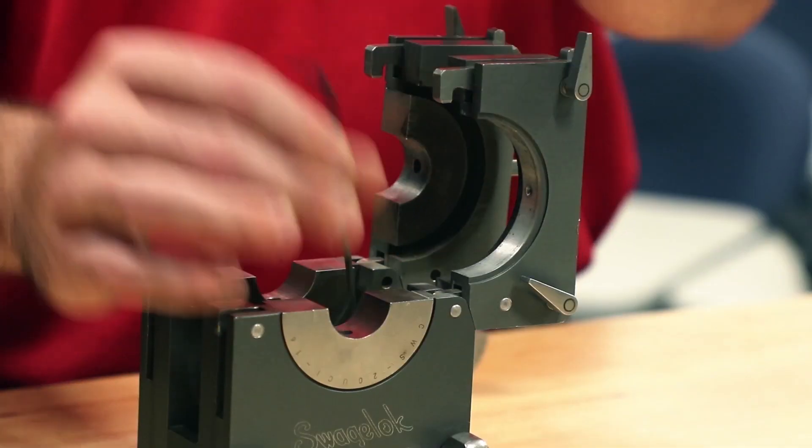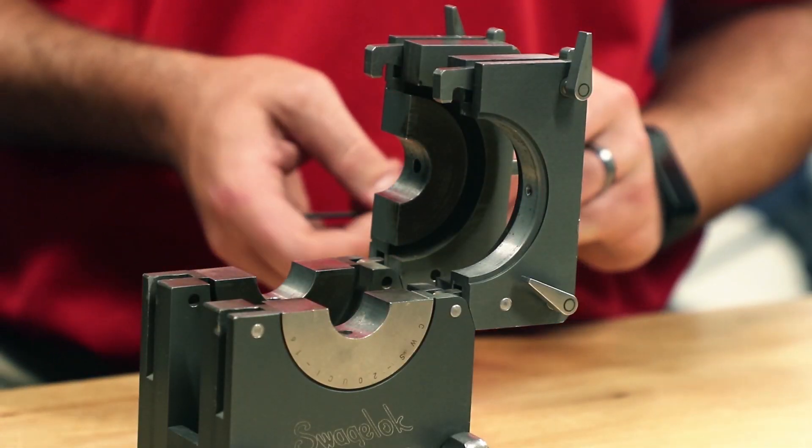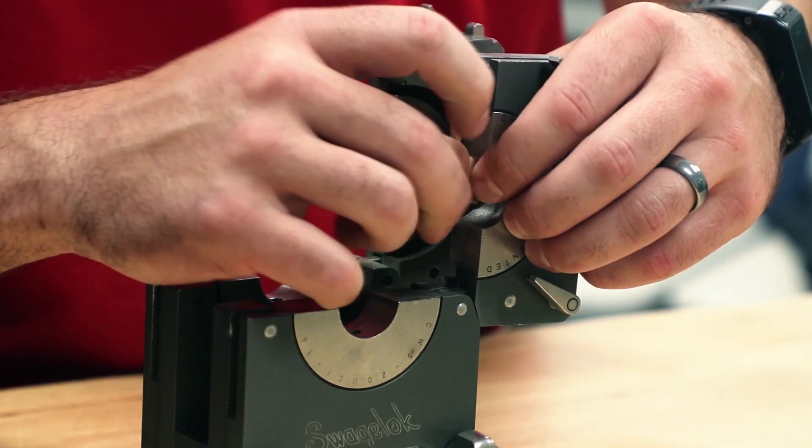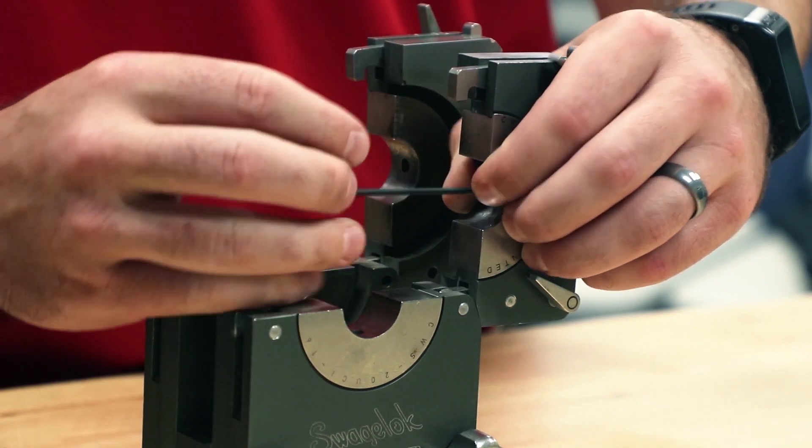When you're orbital welding, keeping the tube or the joint between the two pieces of material supported adequately is extremely important. This fixturing is easy to use but very robust.